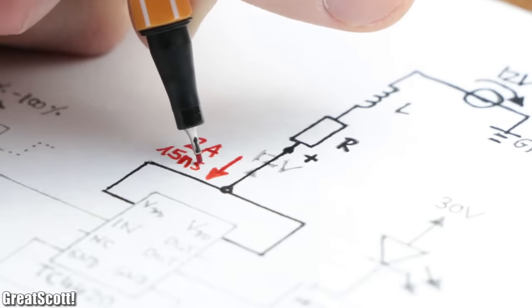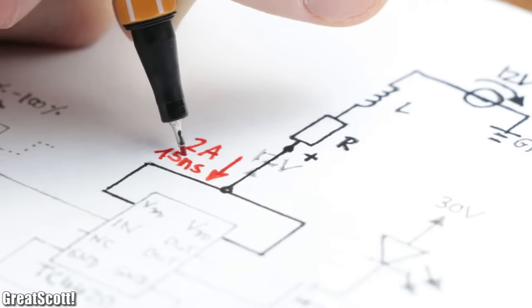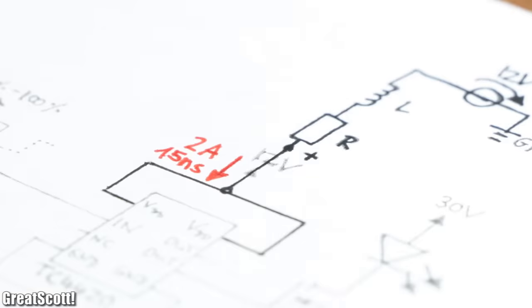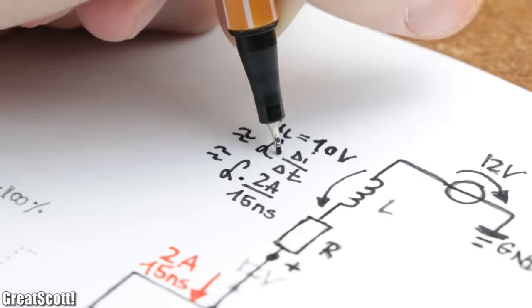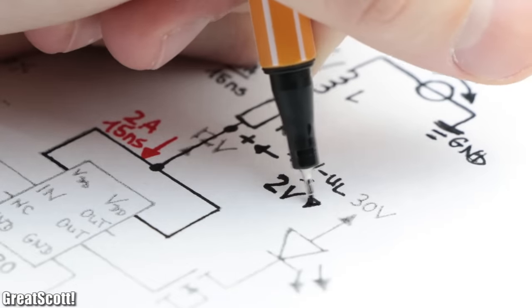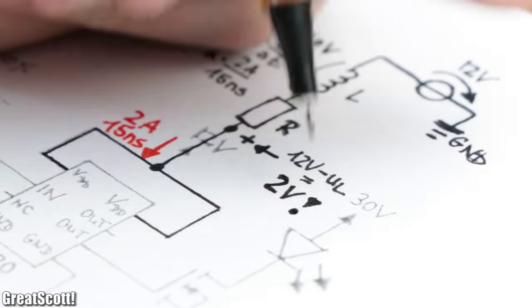But since our IC wants to have 2A in a time of only 50 nanoseconds, our inductor now features a big voltage drop, which means we got a breakdown in the supply voltage of our IC.